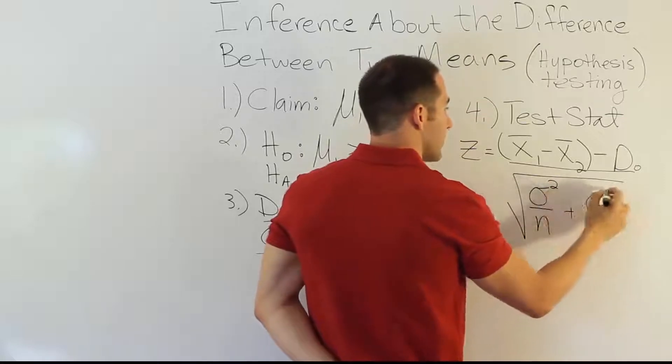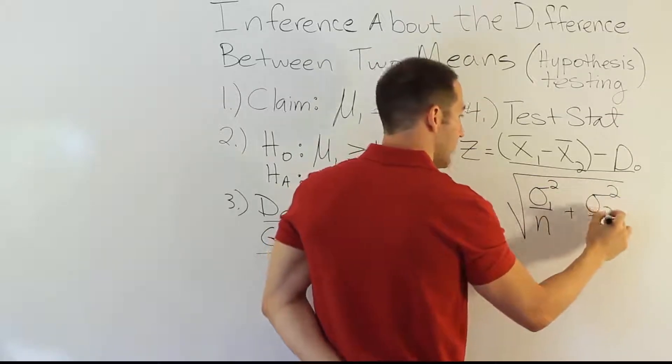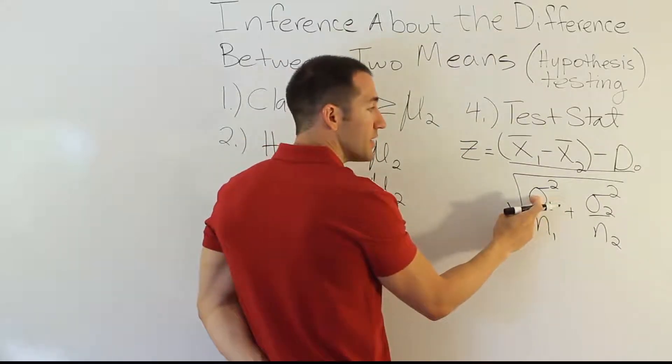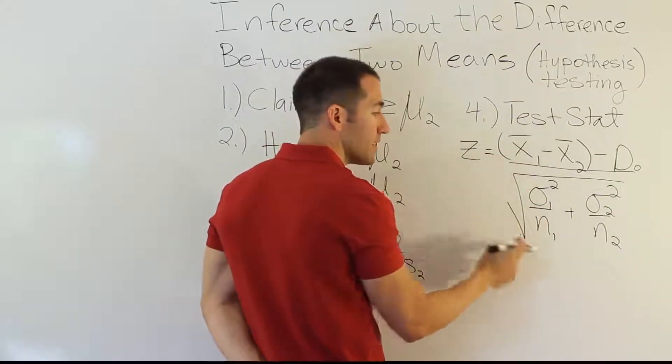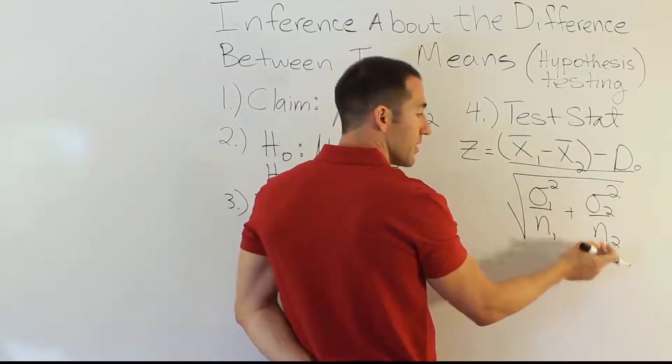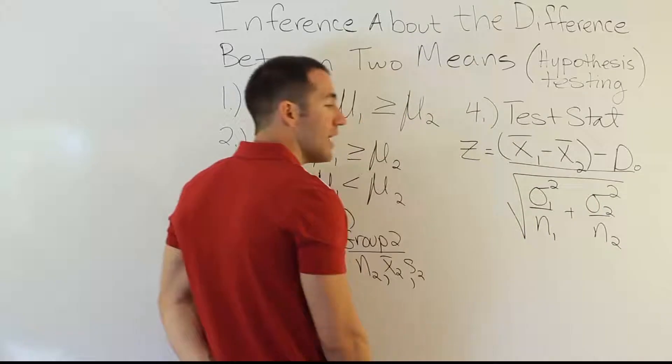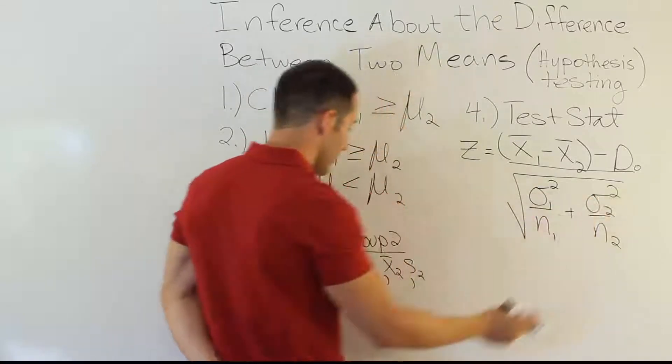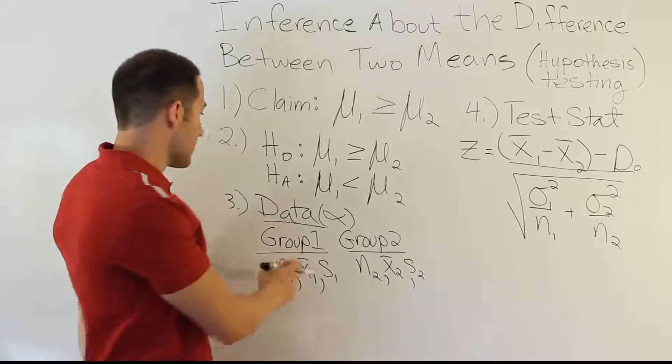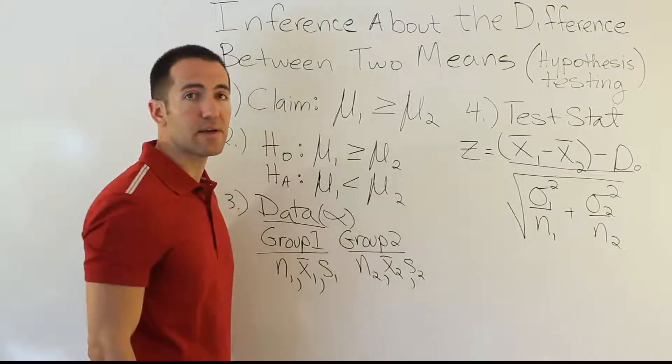And then you have the denominator of the formula, which is the standard error for this quantity. And that's actually sigma squared over N plus sigma squared over N. Sigma squared one, sigma squared two, N1, N2. Okay, so what this is, is actually the population variance for the first population divided by the sample size we used. The population variance for the second population divided by the sample size we used. And if you don't have these quantities, you can use S as a substitute here.